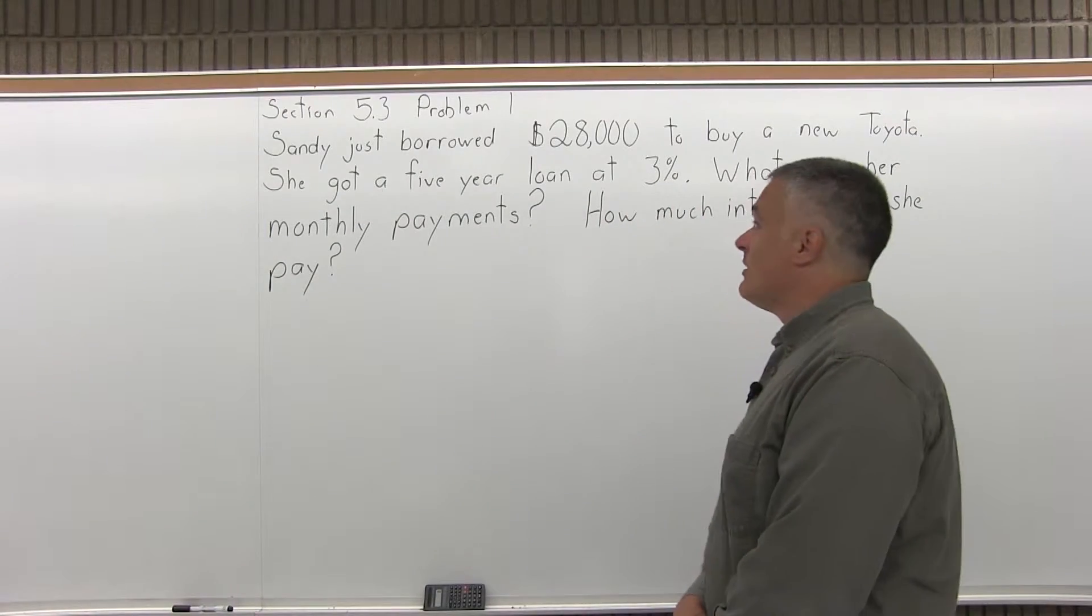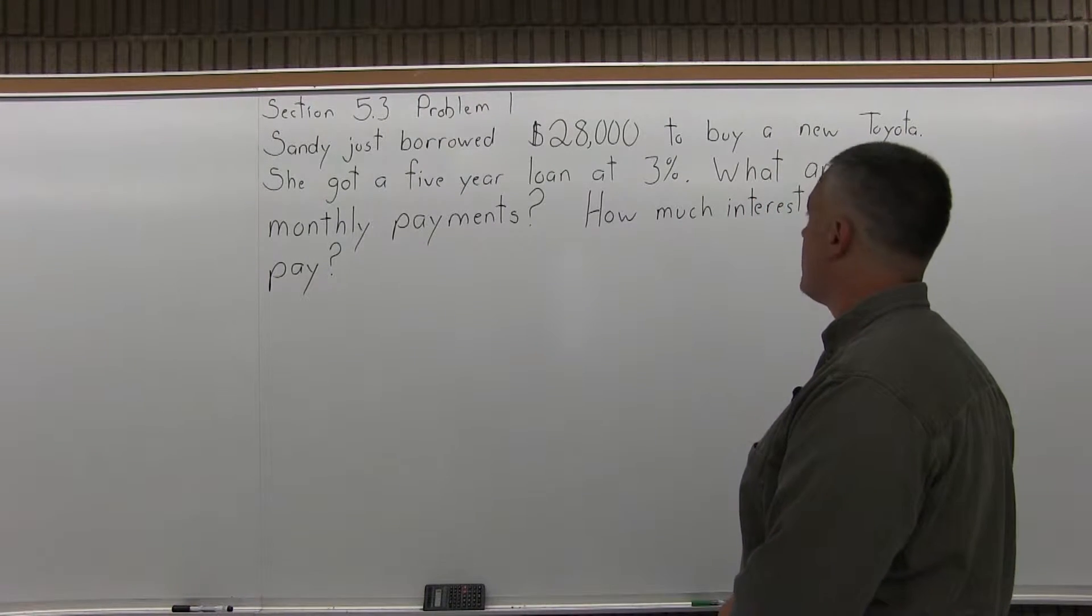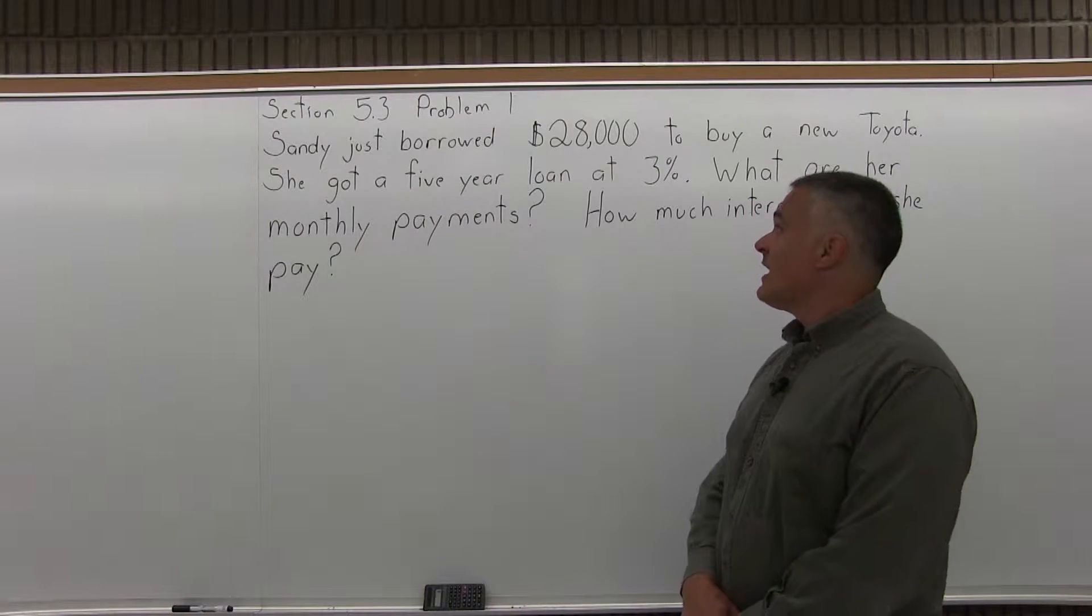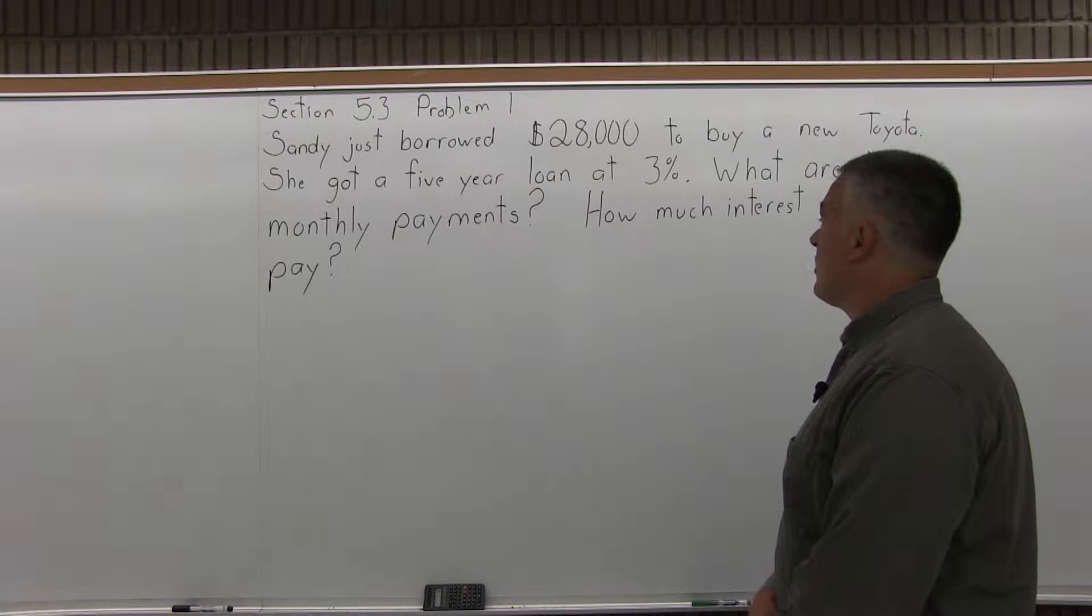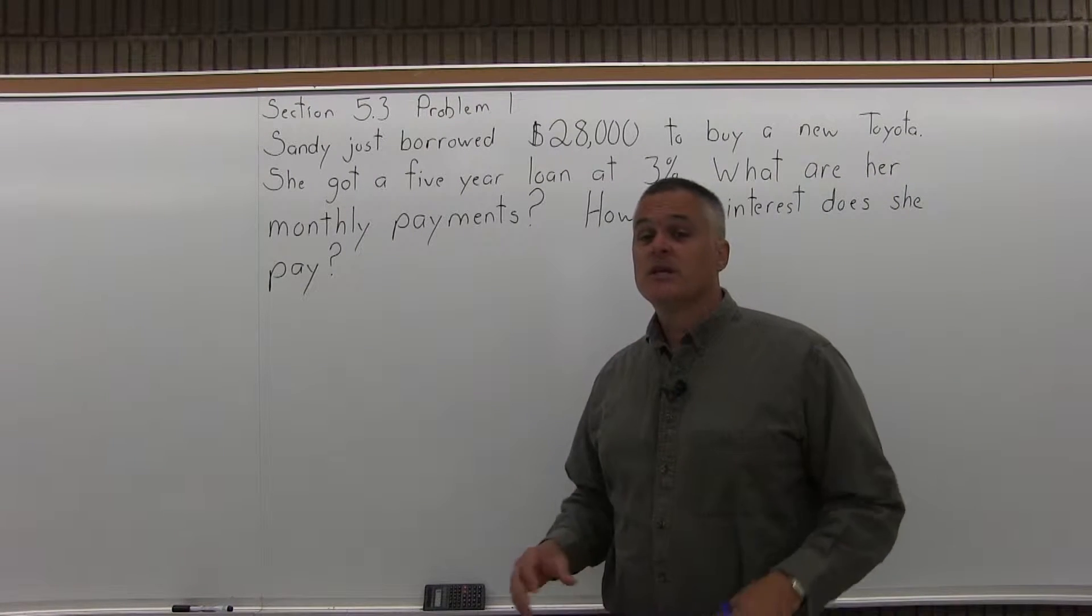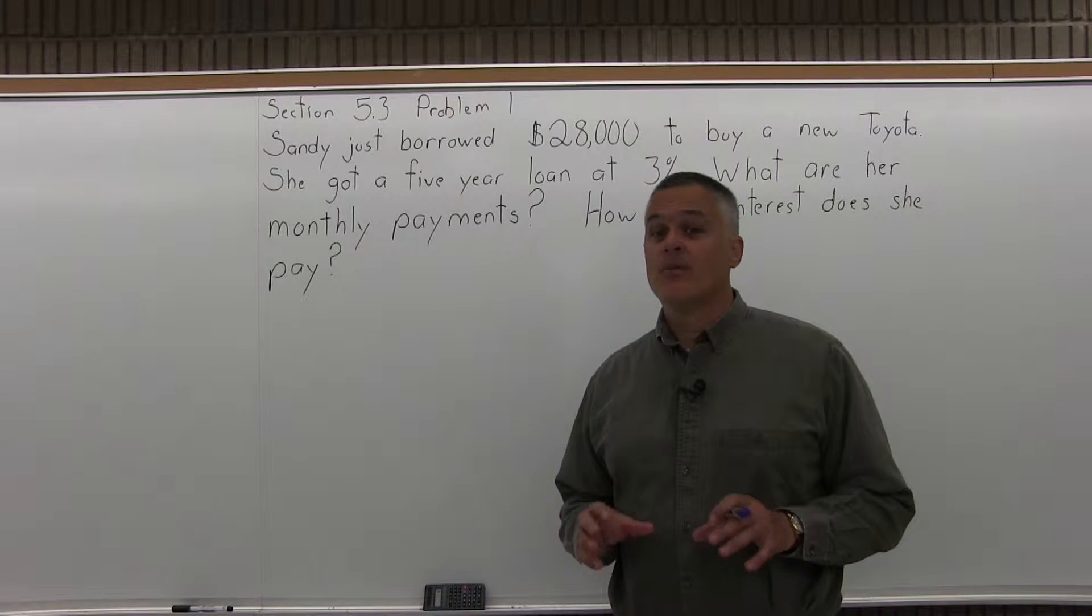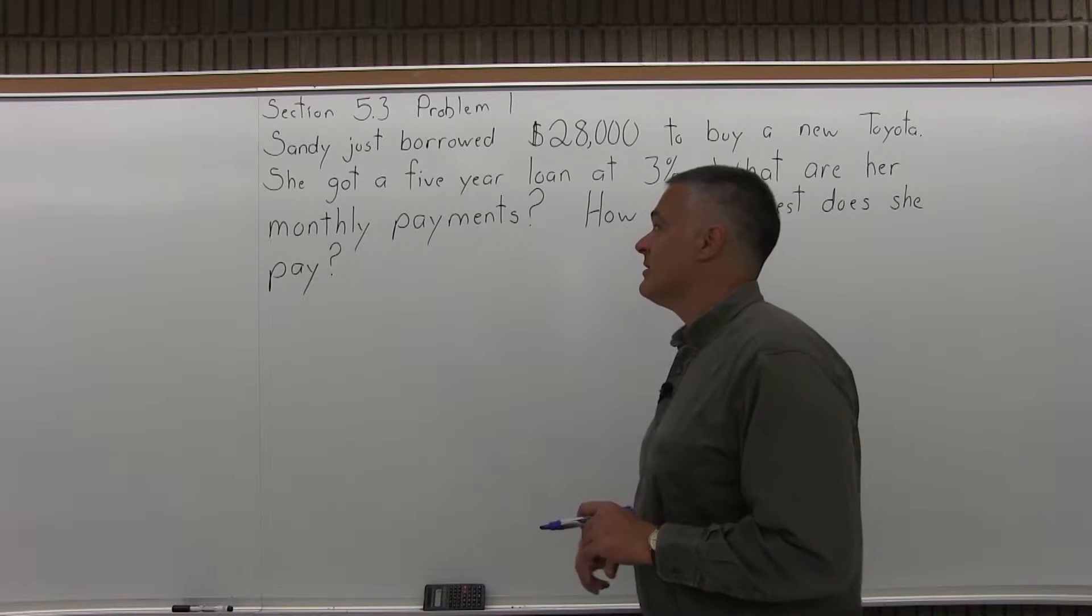This is problem number 1 from Section 5.3. It says Sandy just borrowed $28,000 to buy a new Toyota. She got a 5-year loan at 3%. What are her monthly payments and how much interest does she pay? This will be an interesting comparison to the next problem where somebody buys the same car but gets a different rate and we'll compare those later.